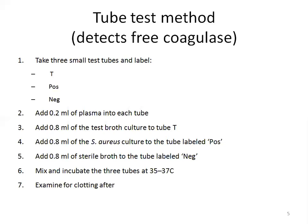After mixing gently, incubate the three tubes at 35–37°C, then examine for clotting after one hour. If no clotting has occurred, examine the tubes again after three hours. If the test is still negative, leave the tubes at room temperature overnight and examine again.